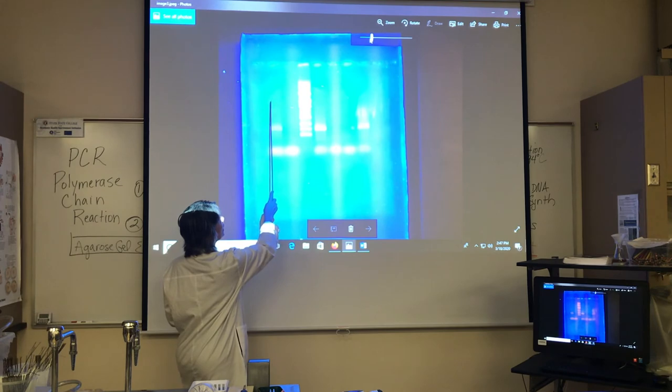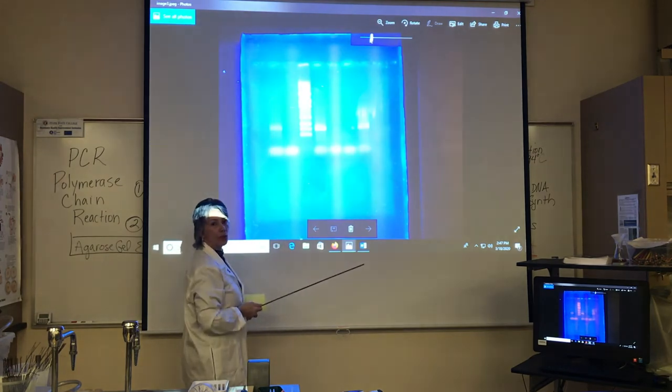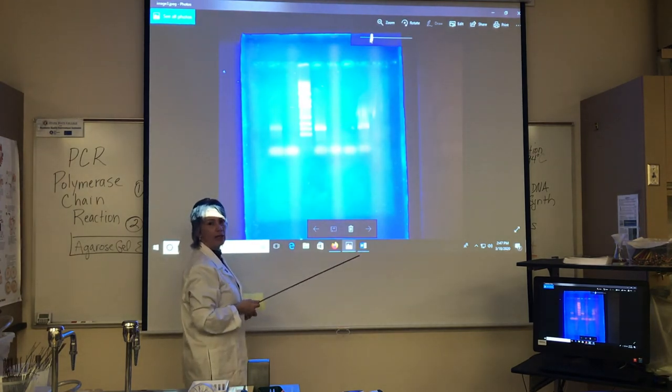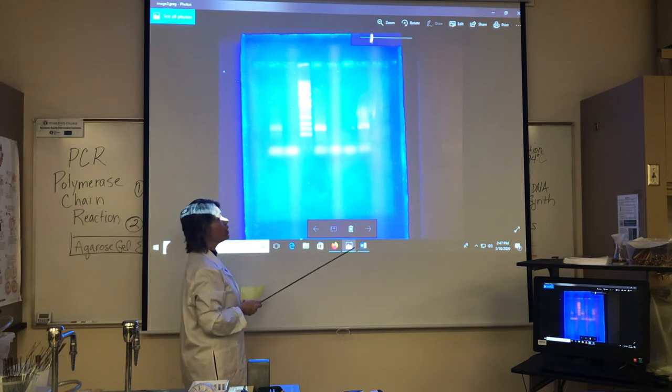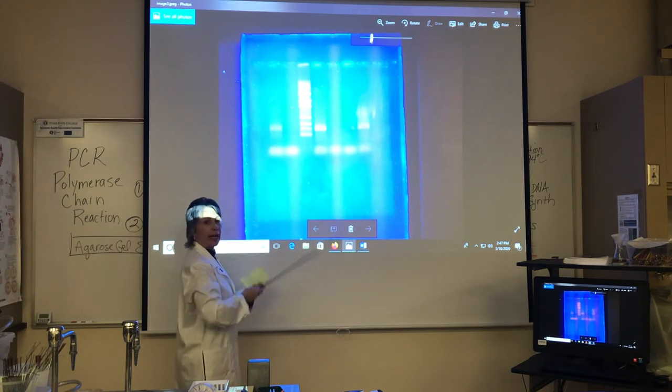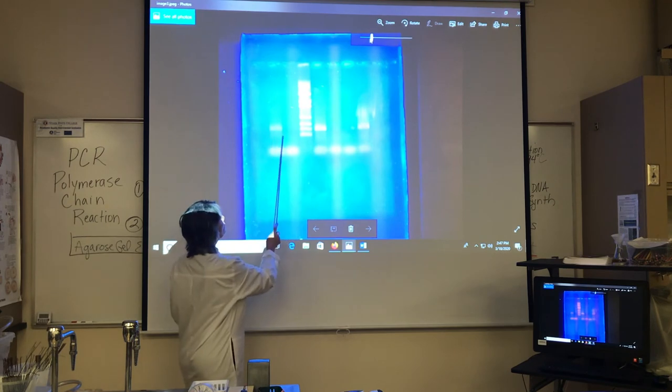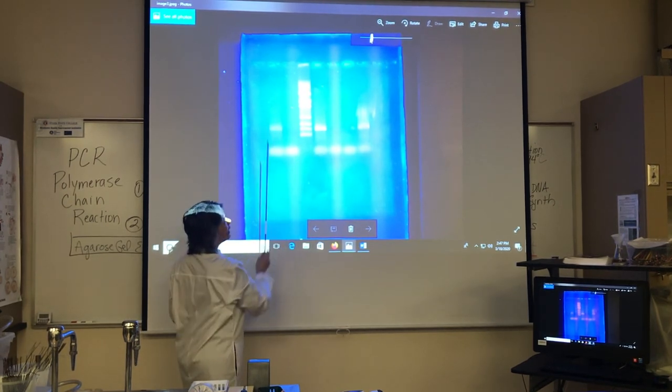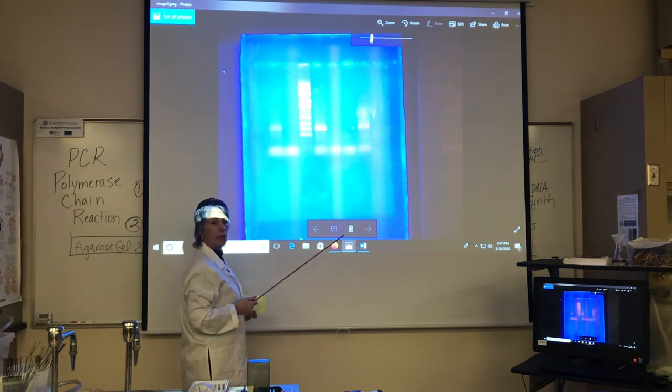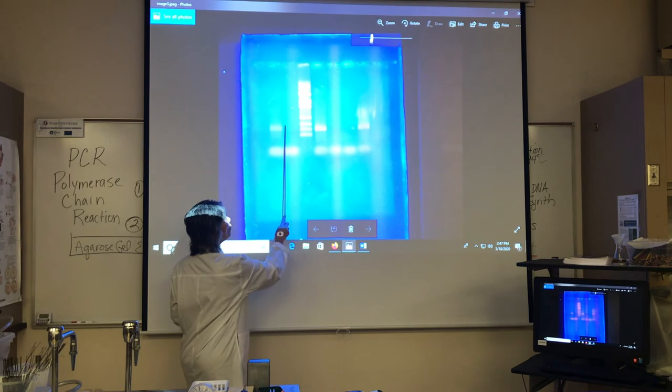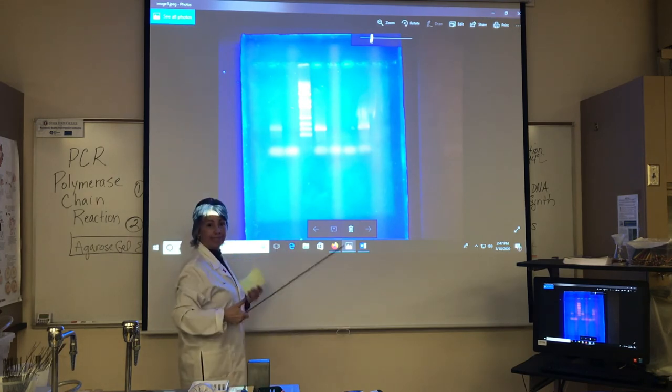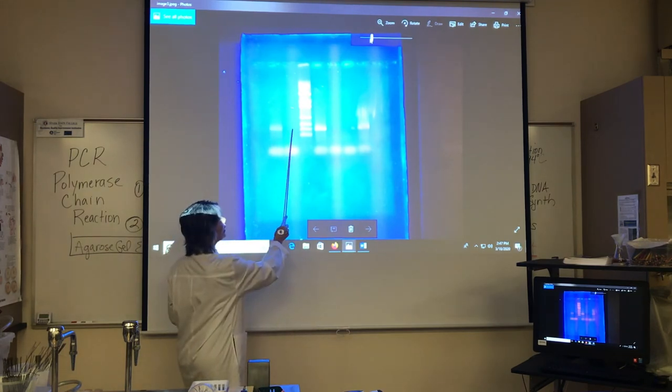These lanes here are the positive and negative controls. You've always got to have positive and negative controls so that you know if your reagents worked and the PCR reaction worked. So our positive control lane, do we see a band that's consistent with being a 1 kb band? Yes. Negative control? No band. Great. So it looks like our reagents were good.